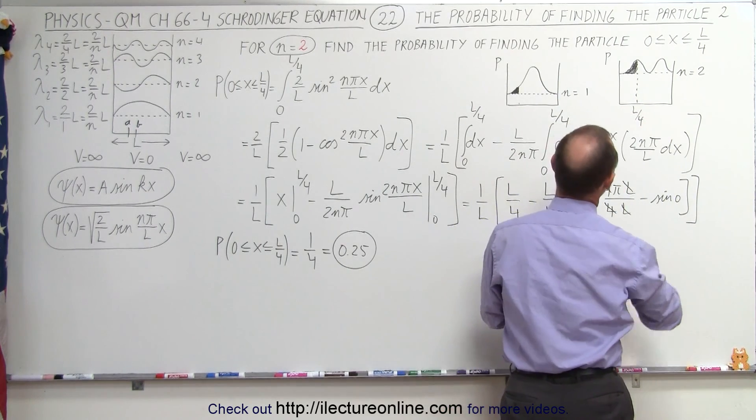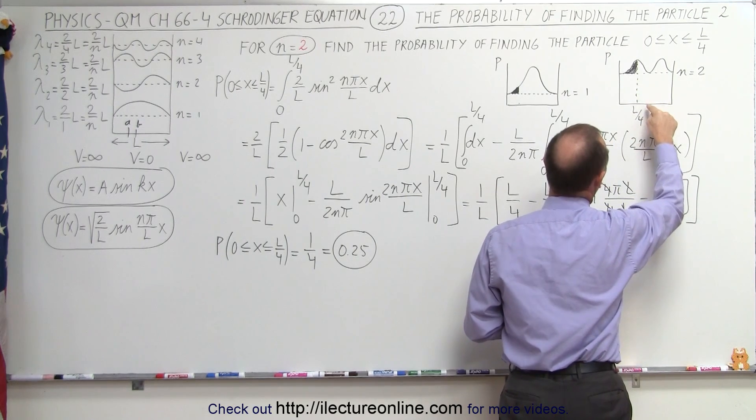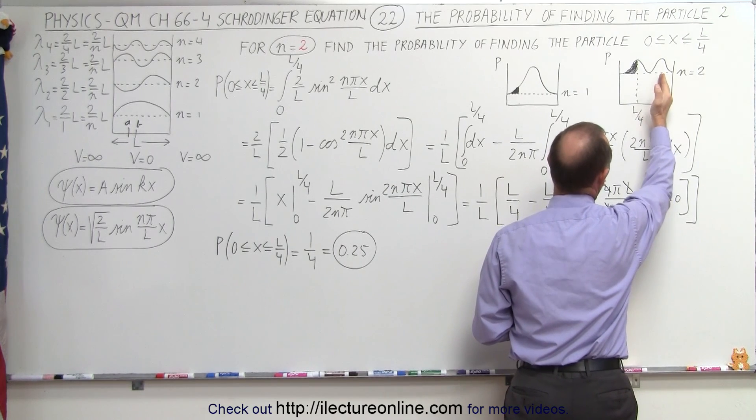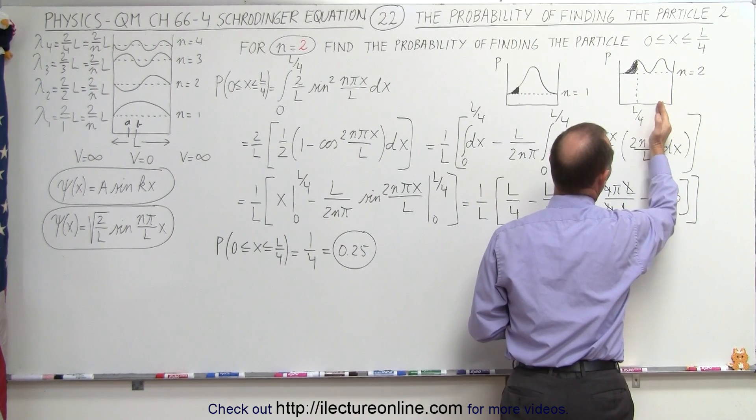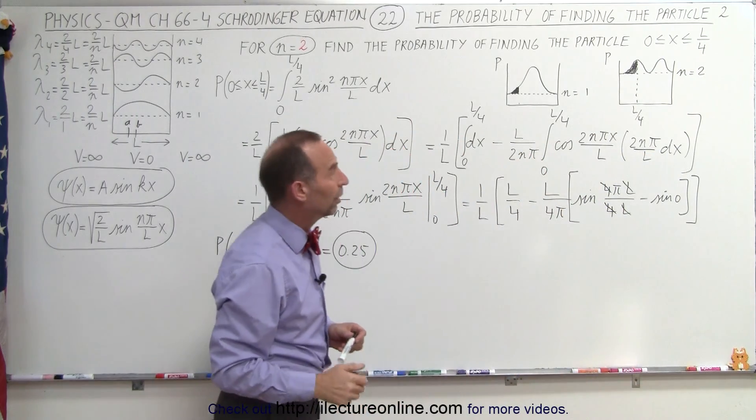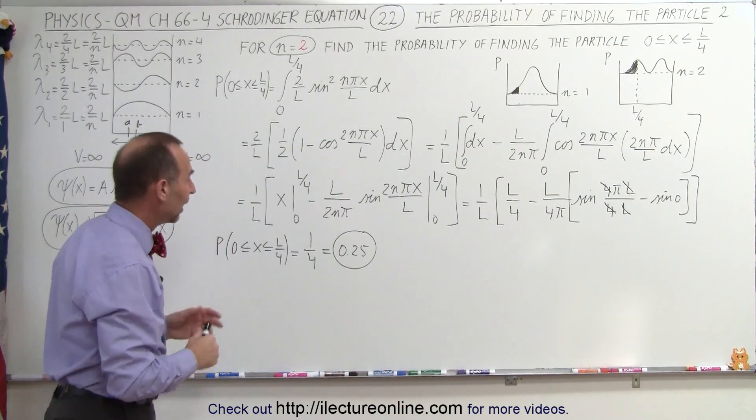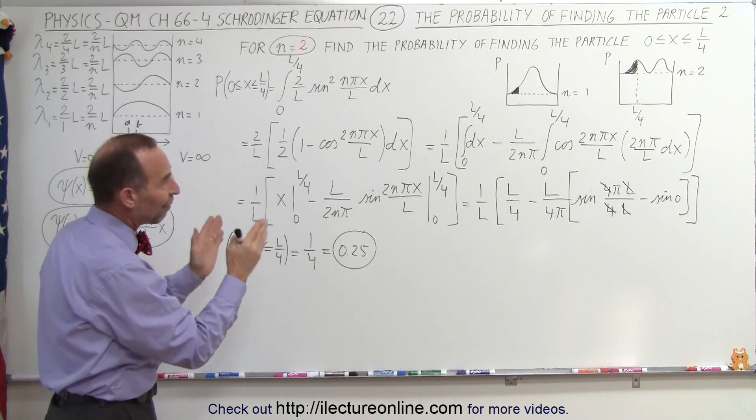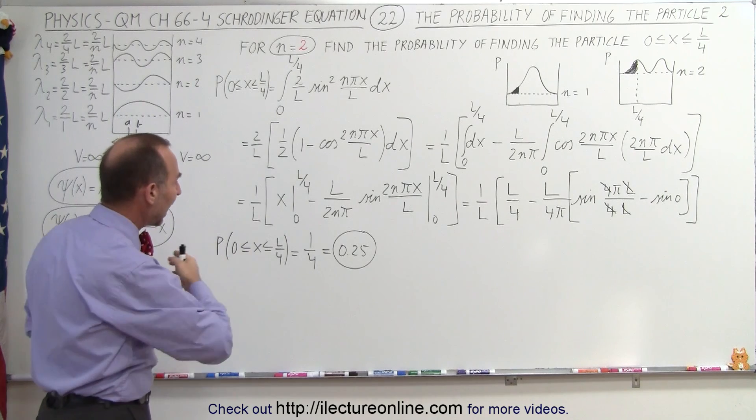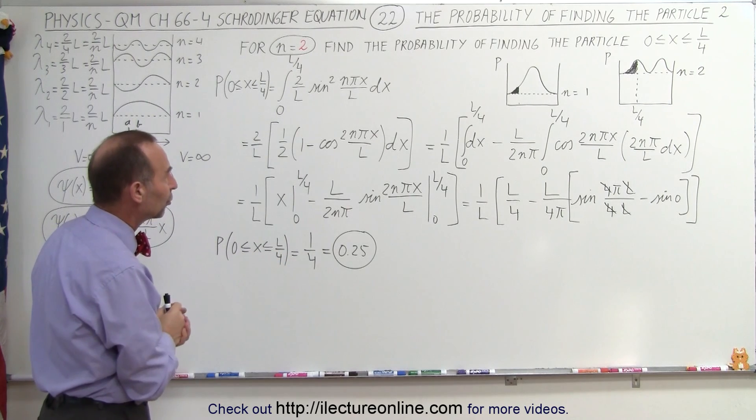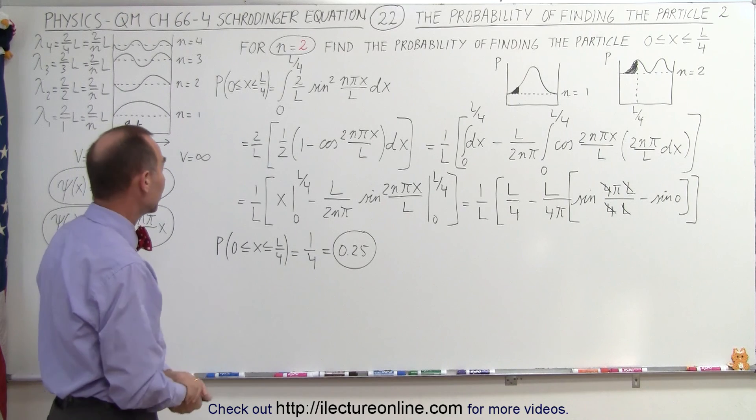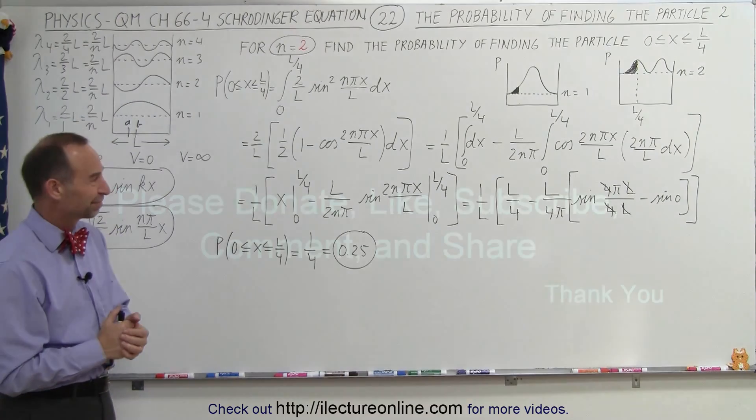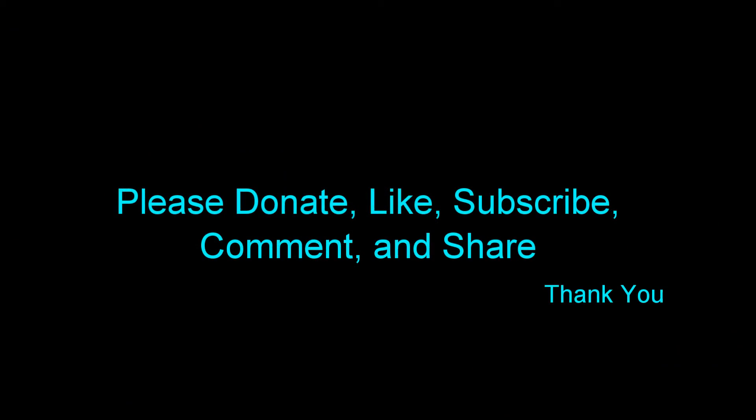It looks like 25% between L over 4 to L over 2, another 25% between L over 2 and 3 quarters L, and another 25% to find it within the last one quarter of that region. So you can see that the probability function really works well in determining the probability of finding a particle in a particular interval as it's moving back and forth between the two ends of your one-dimensional infinite well. And that's how it's done. Thank you very much.